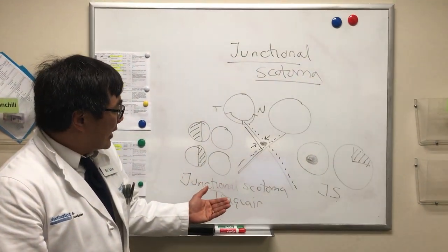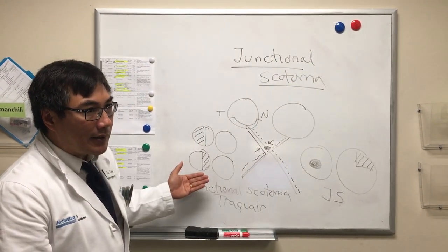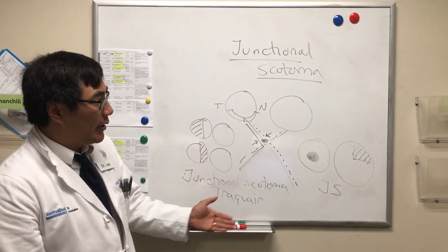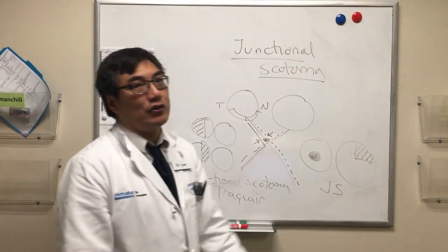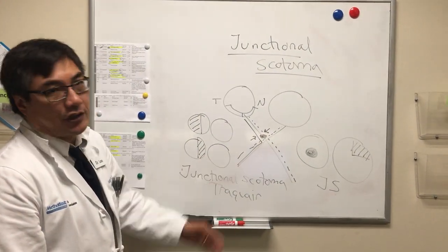So you should learn to recognize both the monocular hemianopic field defect, the junctional scotoma of Traquair, and the contralateral superior temporal field defect, the junctional scotoma.